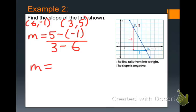5 minus a negative 1 is 5 plus 1, or 6, over 3 minus 6, which is negative 3. To simplify, 6 divided by negative 3 is negative 2. You can see over here, it goes down 6 and to the right 3, so that matches what we found here.